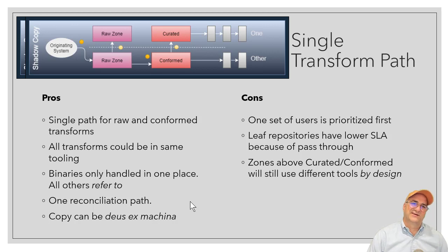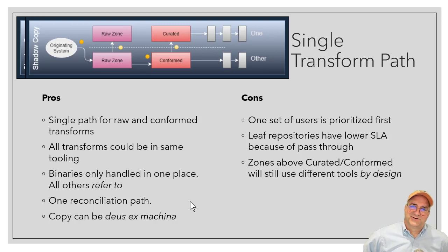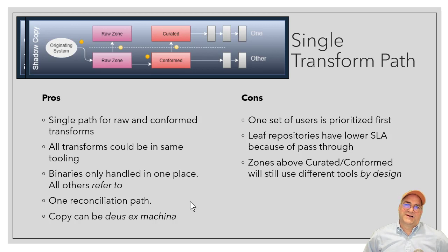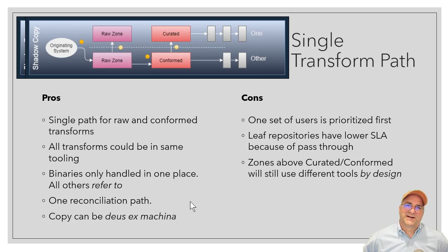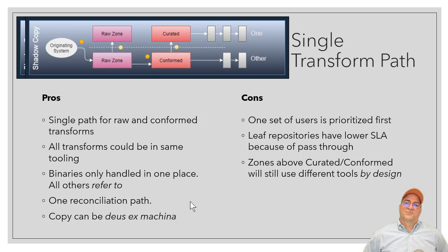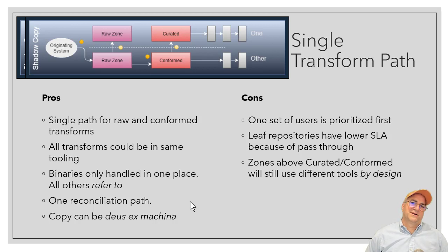The con of this approach is that you end up prioritizing one set of users first, because invariably the lake and the warehouse have different consumers. The leaf repository ends up with a lower SLA because it has to pass through the primary repository, so you have to decide which use cases are primary and secondary. The zones above curated/conformed would still use different tools by design, which means you still have two sets of tools — though that's probably fit-for-purpose and the right way to go.